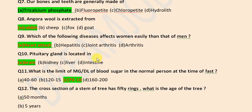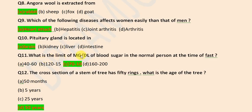Pituitary gland is located in brain. What is the limit of mg/dl of blood sugar in normal persons at the time of fast? It is 70 to 100.